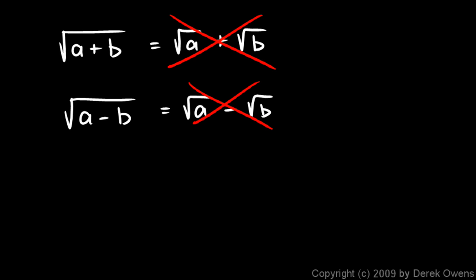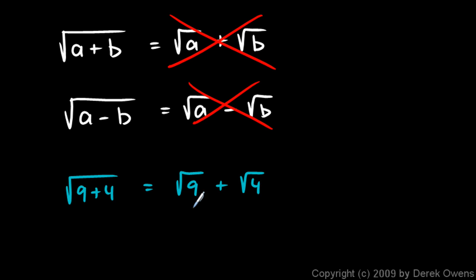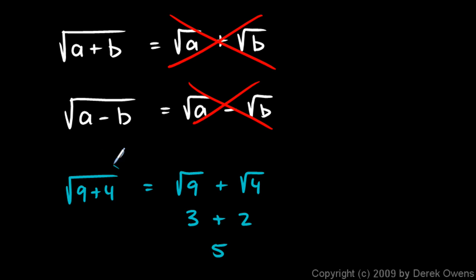You can see that it doesn't work with a simple example. The square root of 9 plus 4 — if you try to say that equals the square root of 9 plus the square root of 4, on the right side the square root of 9 is 3 and the square root of 4 is 2, giving you 5. But on the left we have the square root of 13. The square root of 13 is not 5, because 5 squared is not 13. Those are clearly not equal to each other.